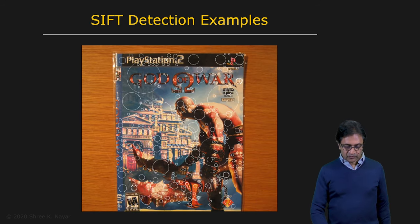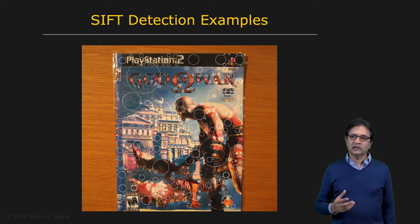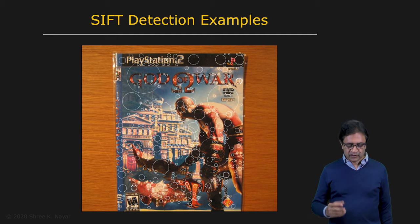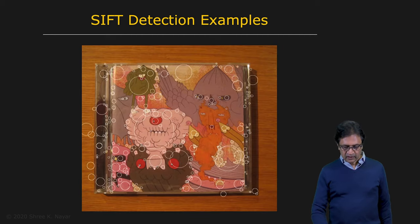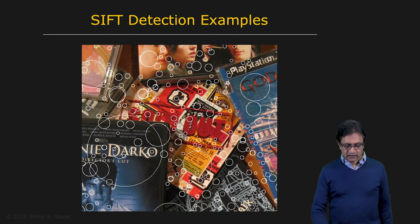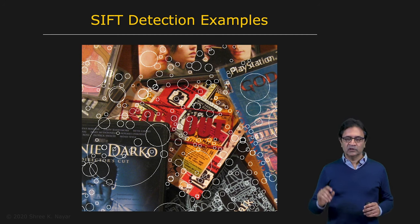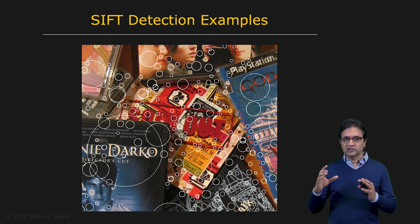Here are some other examples. Here's an object, and every circle is a SIFT interest point. Note that not all of these are obviously blobs — we're looking at things that are blob-like, which have some interesting appearances within them. Here's another example, and yet another. So we know how to find the interest points, we know their locations, and we know their scales.